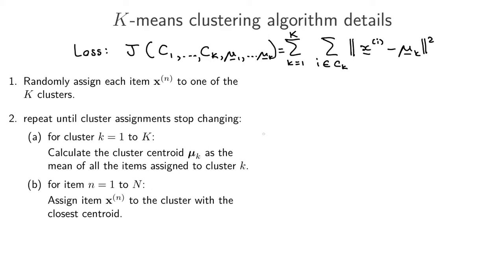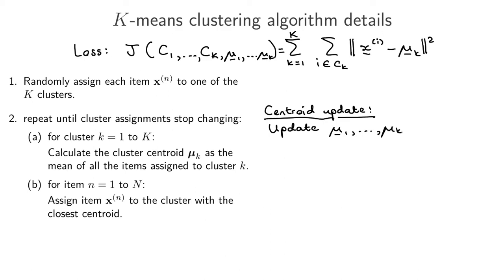Let's see how each step inside the iterative loop actually improves this loss. Step 2a is the centroid update step: we update mu_1 through mu_K while keeping the cluster assignments C_1 through C_K fixed. We keep the i-in-C terms fixed and just change the mu's. That is what happens in step 2a.